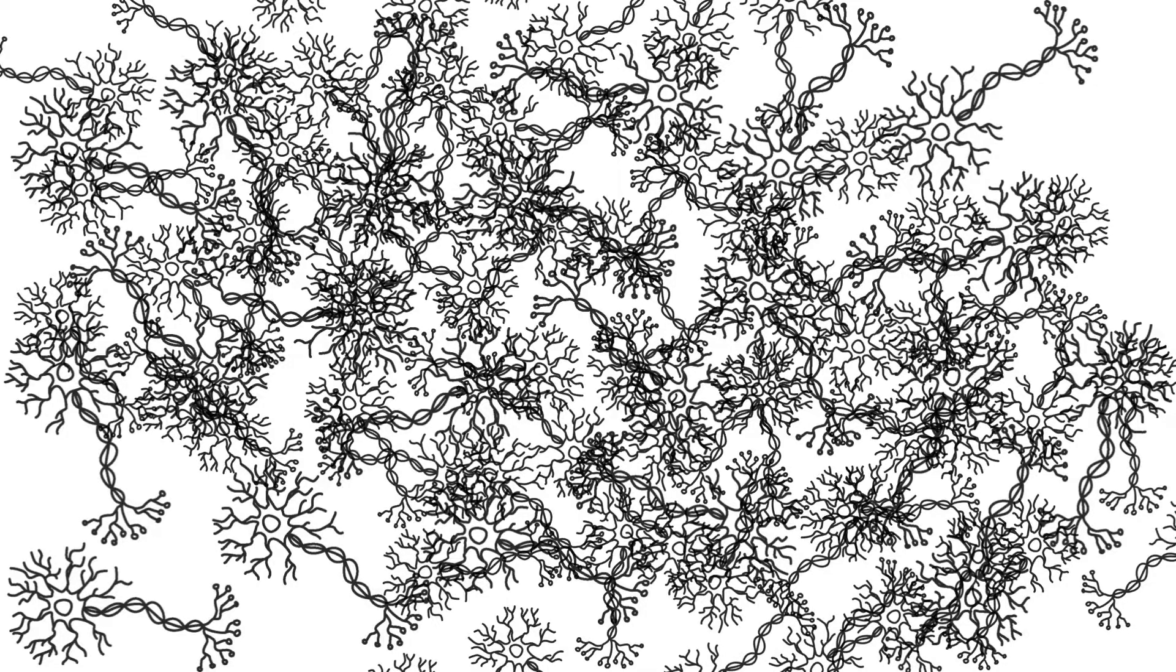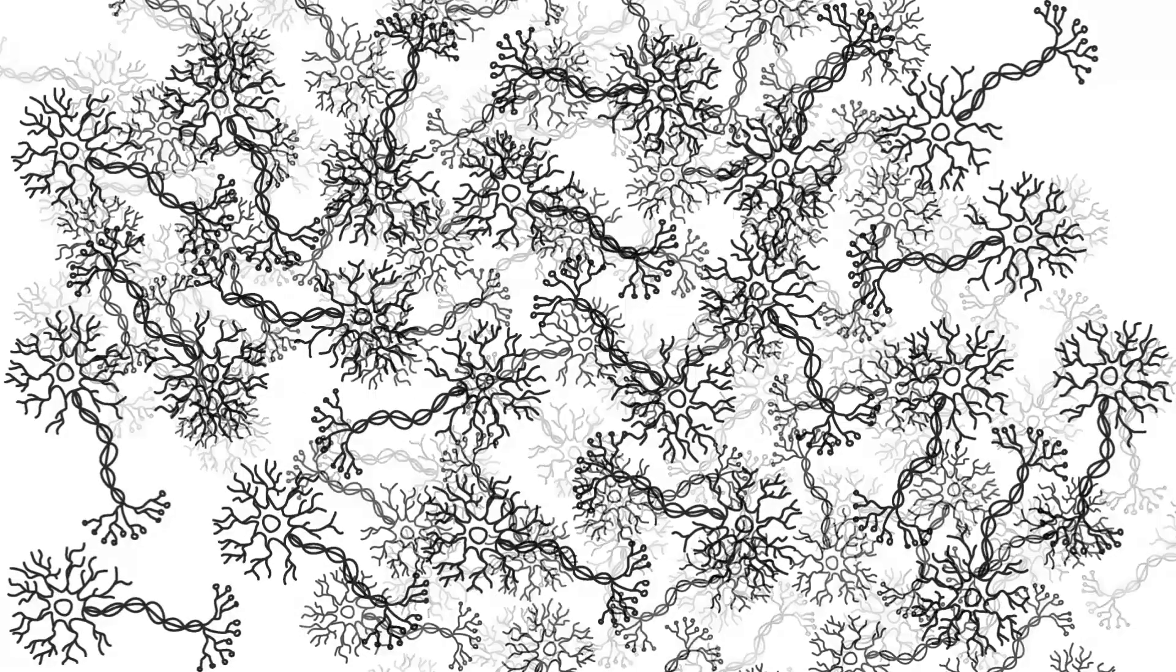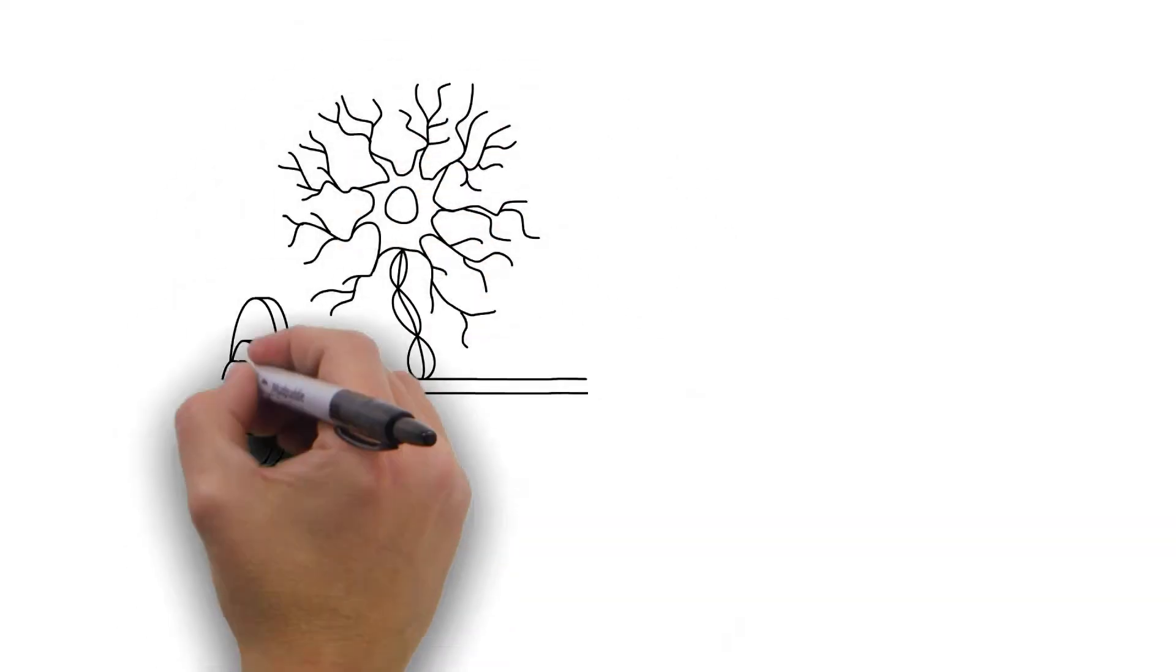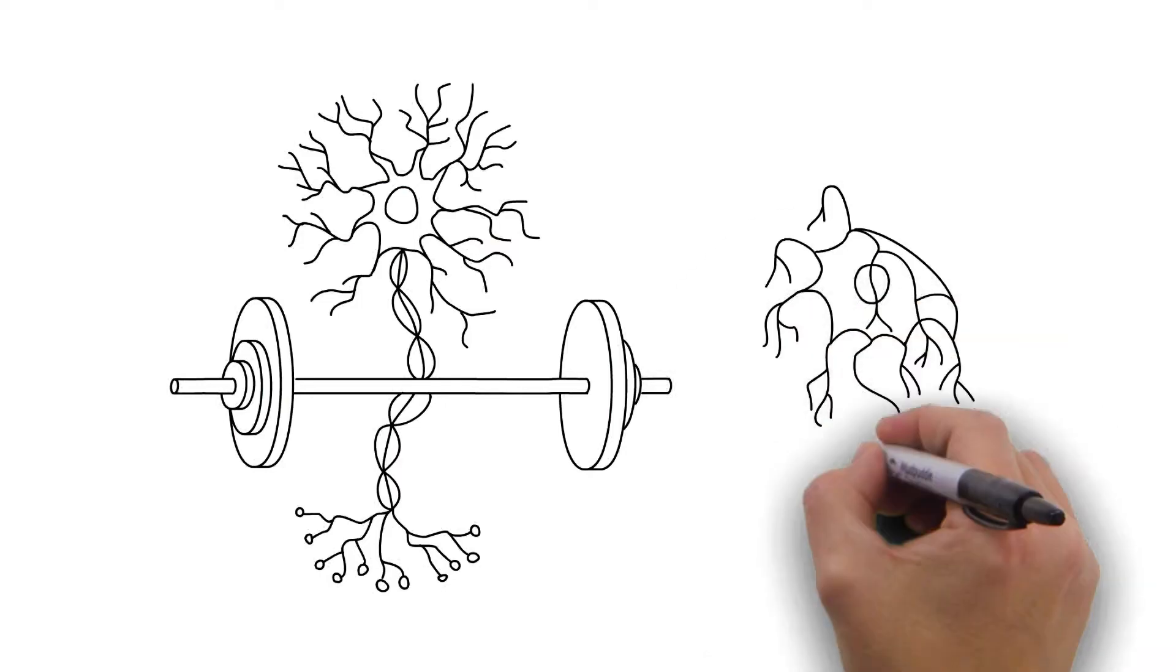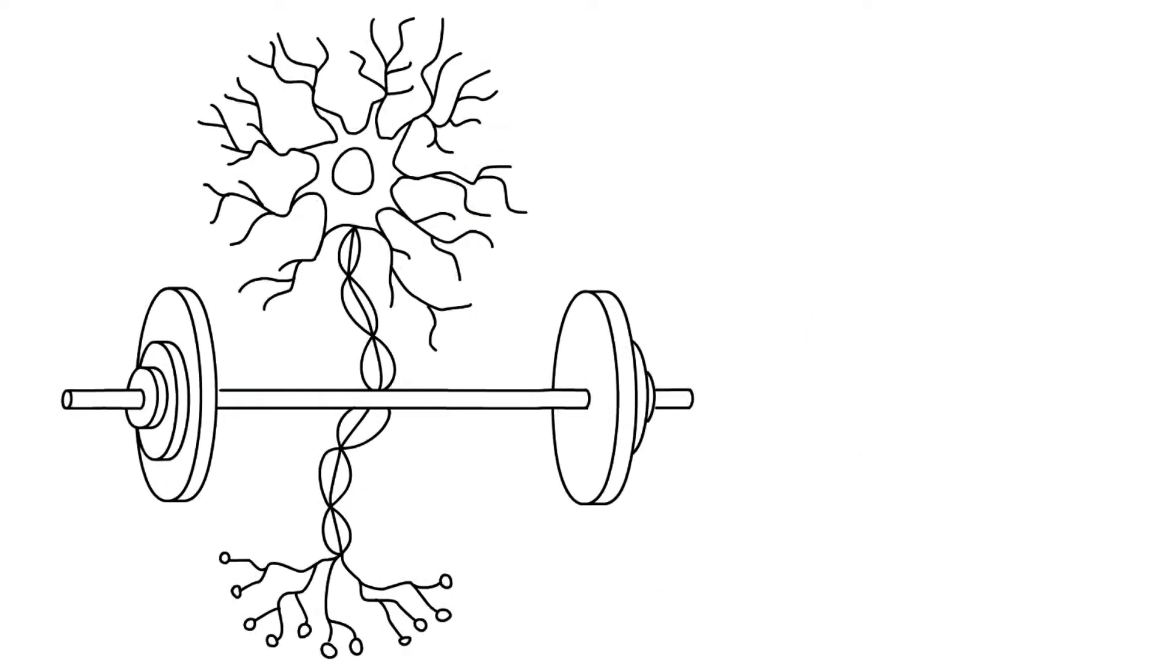A baby is born with more neurons than he or she will need. The cells then begin a process of elimination and rewiring. Neurons are overproduced during certain developmental stages. Then some synapses and neurons that are not being used are eliminated to allow those being used to grow.